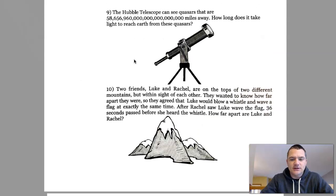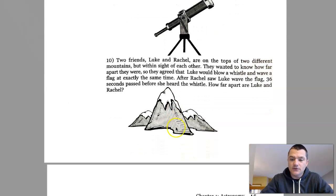Two friends, Luke and Rachel, are on tops of two different mountains but within sight of each other. They wanted to know how far apart they were, so they agreed that Luke would blow a whistle and wave a flag at exactly the same time. After Rachel saw Luke wave the flag, 36 seconds passed before she heard the whistle. How far apart are Luke and Rachel?